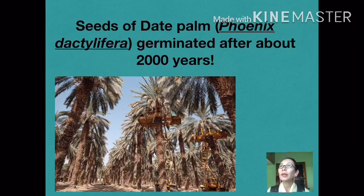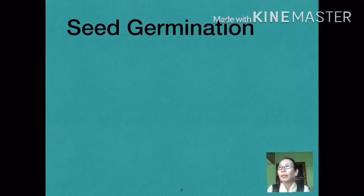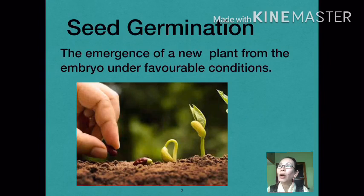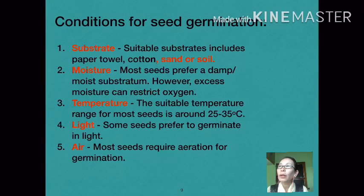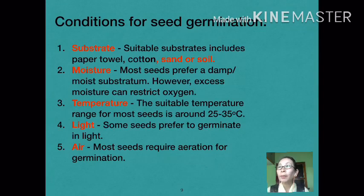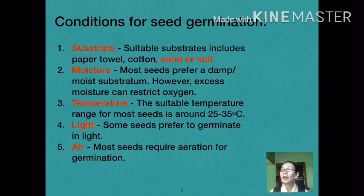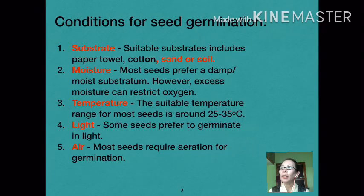After breaking seed dormancy, the embryo begins to produce a new plant. Successful germination requires a suitable substratum such as soil, water, paper, or cotton. Most seeds need enough moisture for germination, but excess water must be avoided as it can limit oxygen supply and cause rotting. Temperature also influences the rate of germination. Likewise, seeds have specific light requirements, and during this phase of active growth, seeds are in constant need of energy which is produced efficiently in the presence of oxygen.